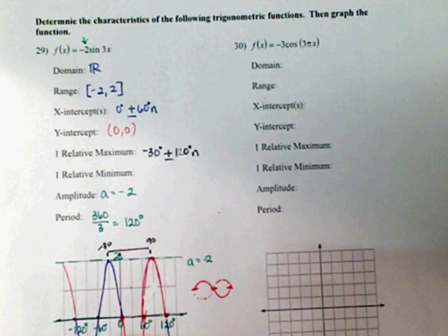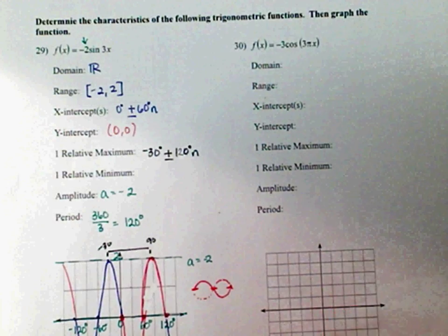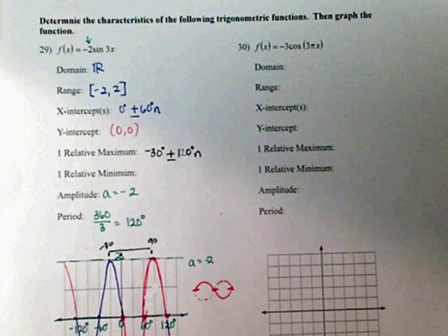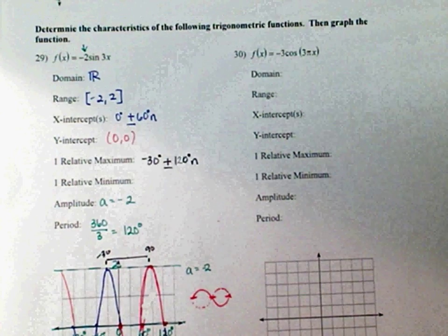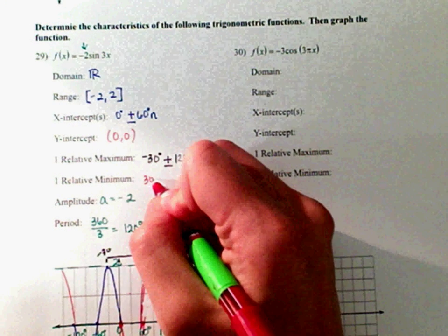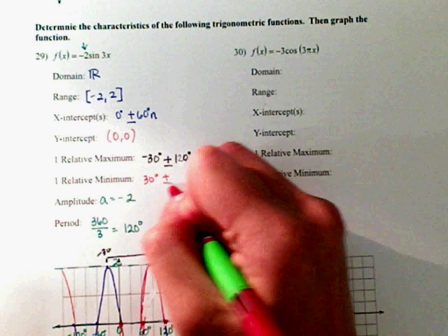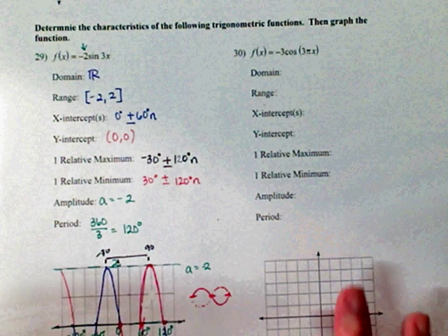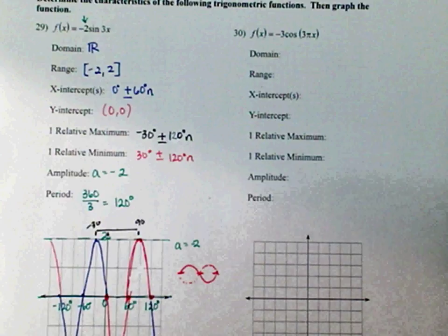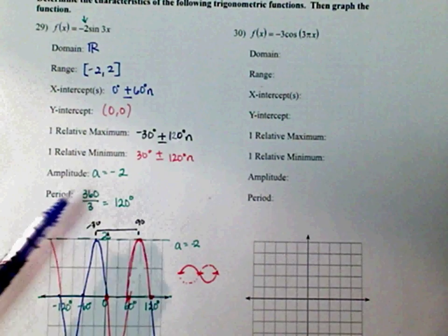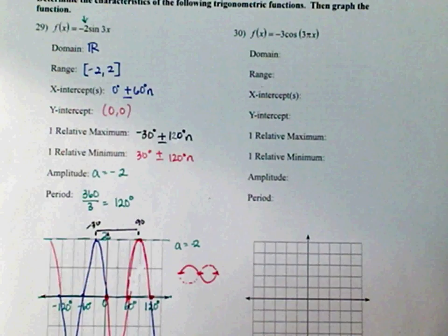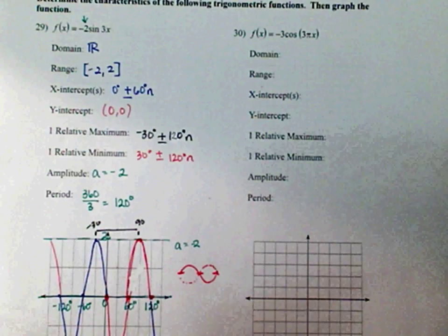Your relative minimum. So, it goes from here to right here. So, this is from 30 to 150. So, starting at 30 degrees. Plus or minus a change every 120 degrees. Just like that. Amplitude is negative 2. Period is 120. So, I kind of want you guys to kind of see what relationship you kind of notice as well.